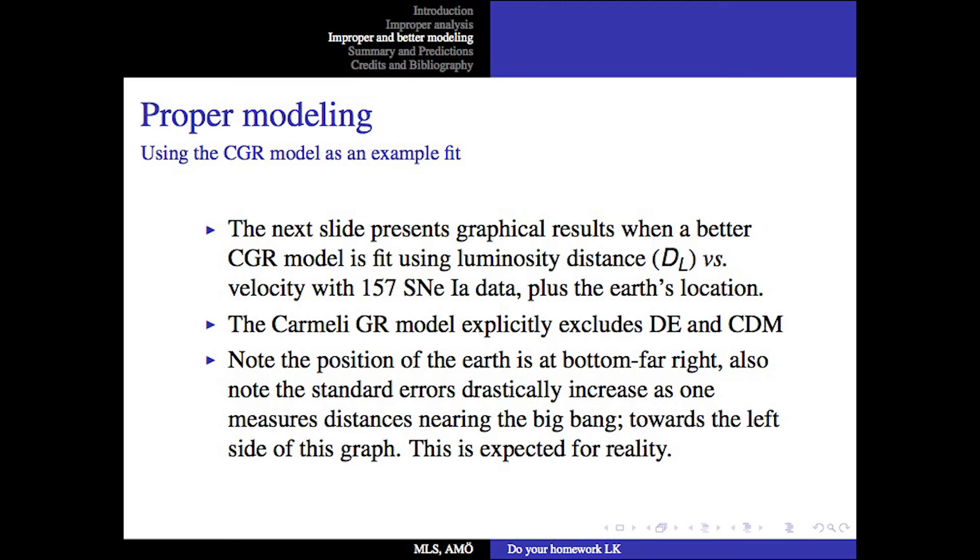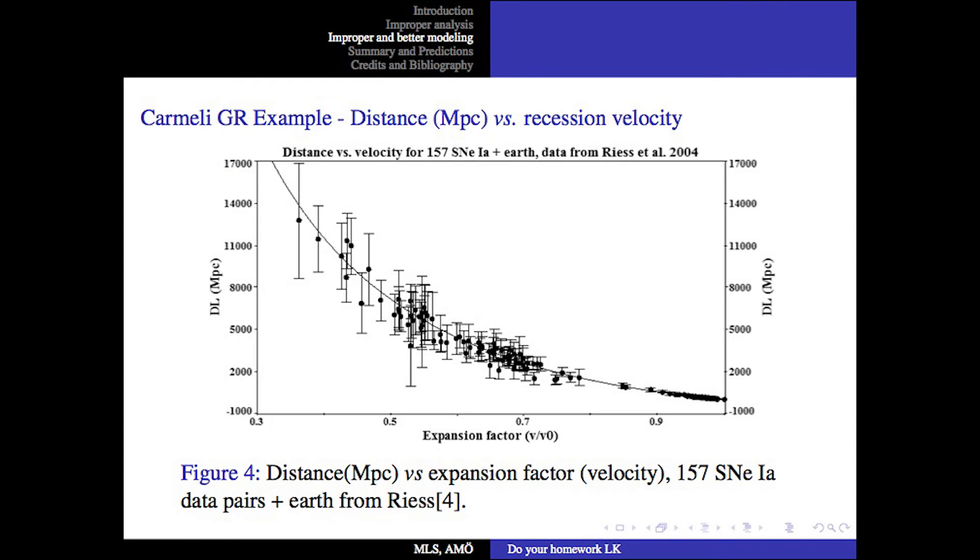Also note, the standard errors drastically increase as one measures distance nearing the Big Bang, that is toward the left side of the graph. This is expected for reality, the further back in time you go, the less accuracy you expect. And here we just took that example of the Carmeli general relativity. This is our plot of the distance versus recession velocity. Notice that the standard errors increase drastically toward the left-hand side of the plot, as one reaches back toward the Big Bang.